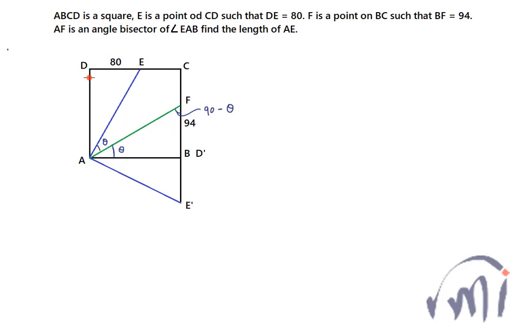And here this DAB is 90 degrees and EAB is 2 theta that means this remaining angle, this angle, angle DAE will be equal to 90 minus 2 theta. So this angle will also be equal to 90 minus 2 theta.